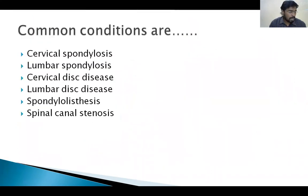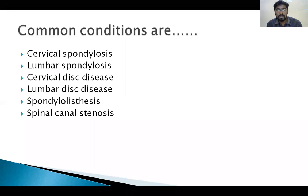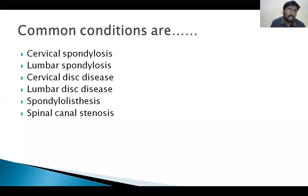What are the common conditions we deal with in the spine? One is cervical and lumbar spondylosis, cervical and lumbar disc prolapse, spondylolisthesis, and spinal canal stenosis. Today we are going to discuss spondylosis and disc prolapse.